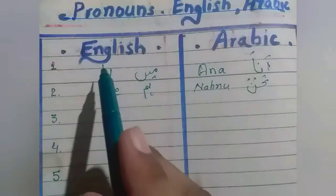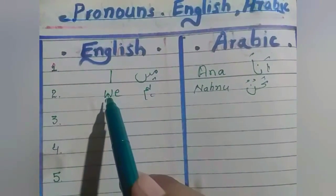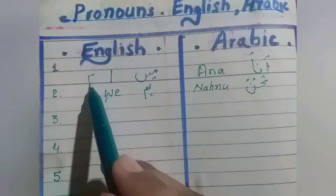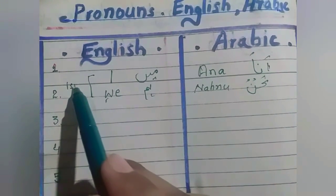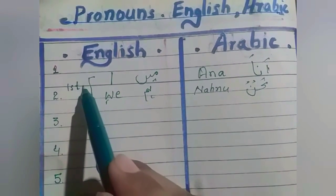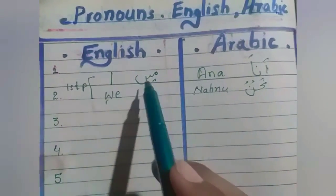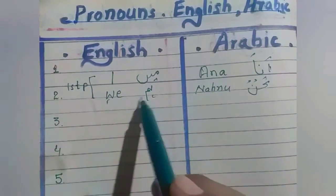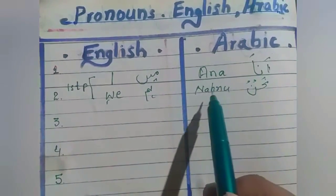First person singular: I, main. Plural: we, am. In Arabic: ana, nah, no.